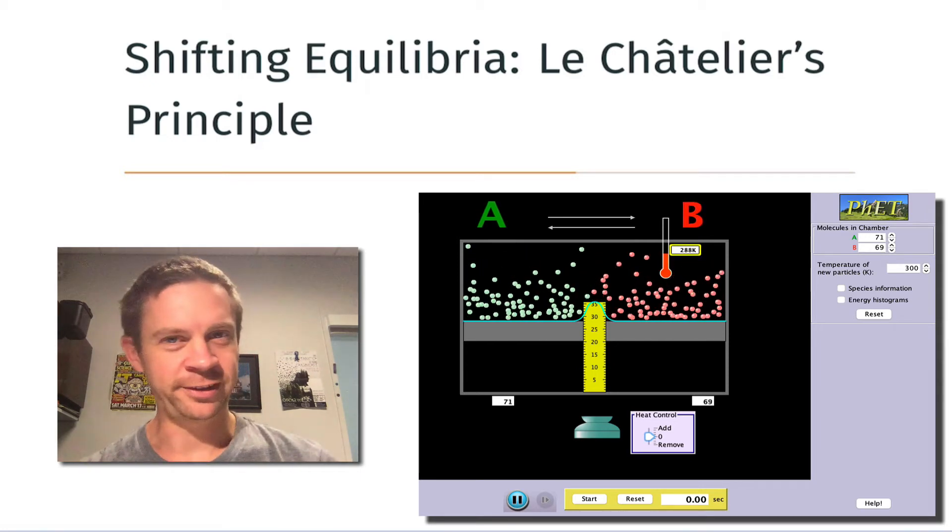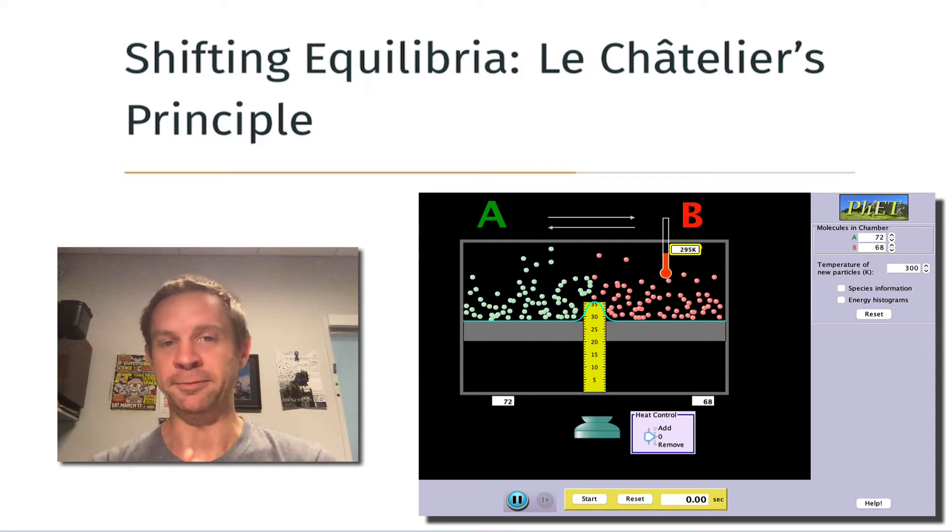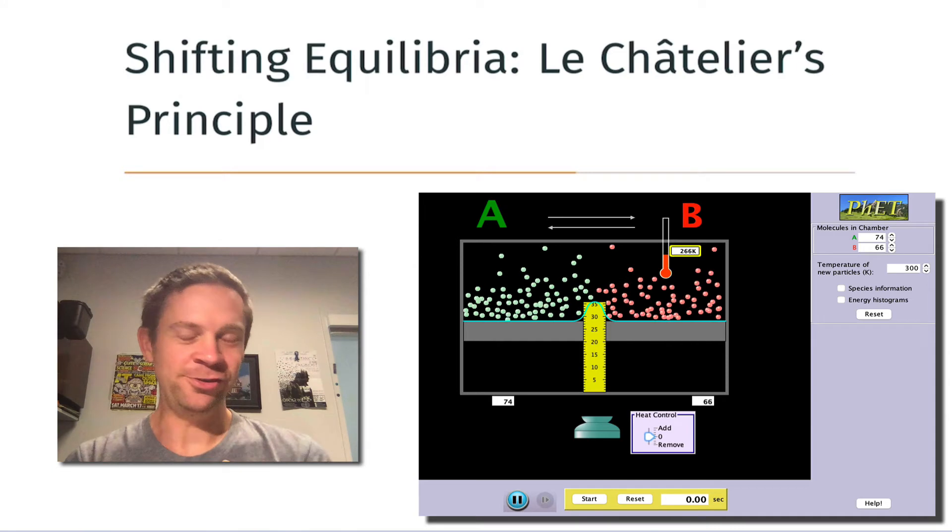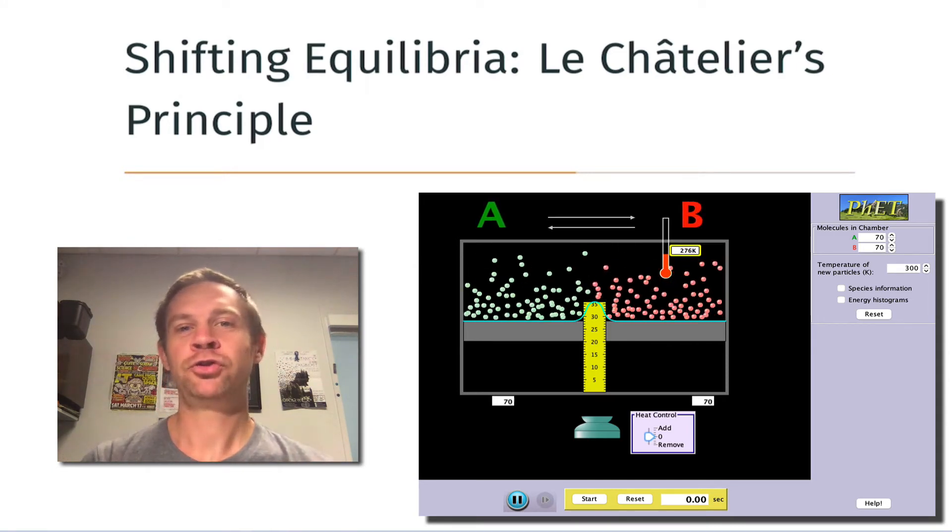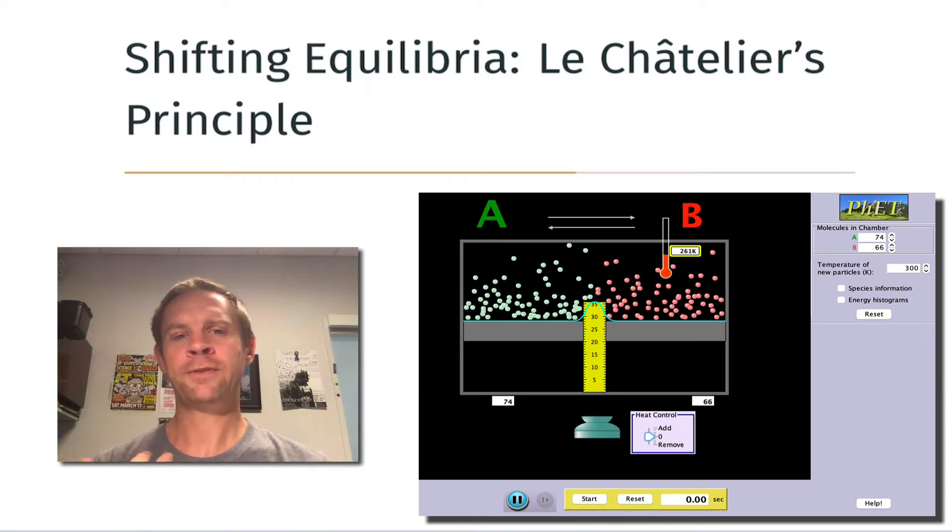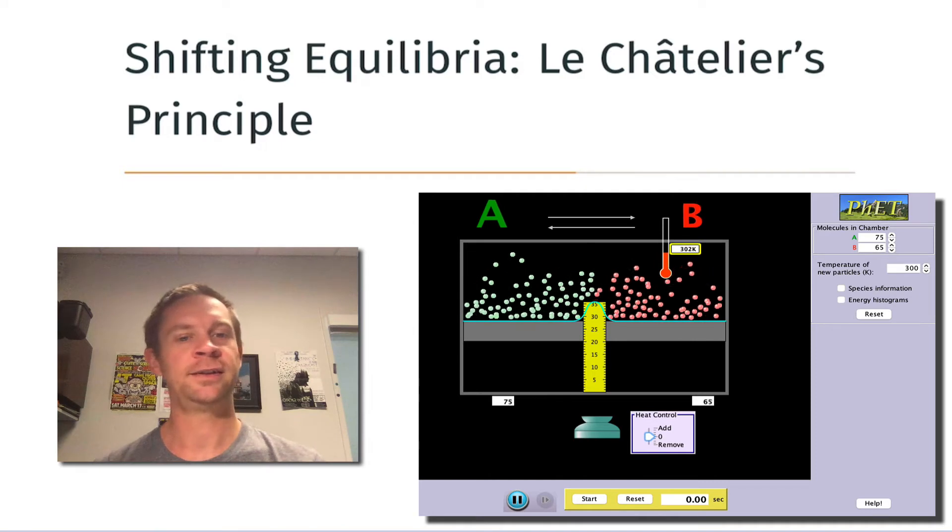But this presents a bit of a difficulty. Say I want to produce B from A, but what nature apparently wants to do is for a 50-50 mixture of A and B to coexist. So we're left wondering, is there a way for us to produce B in 100% yield?